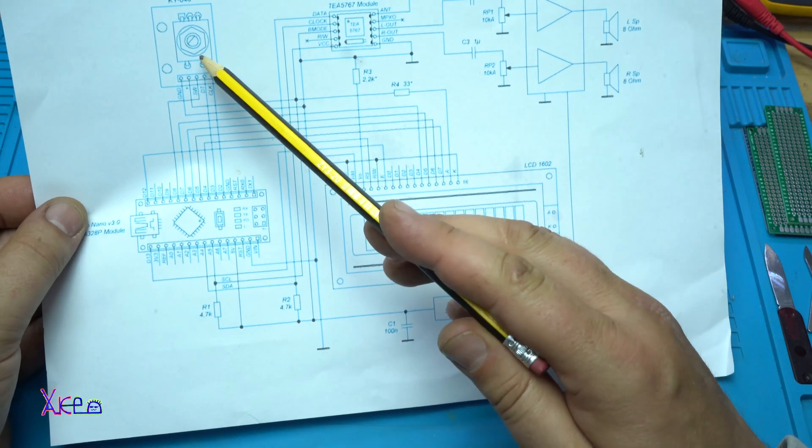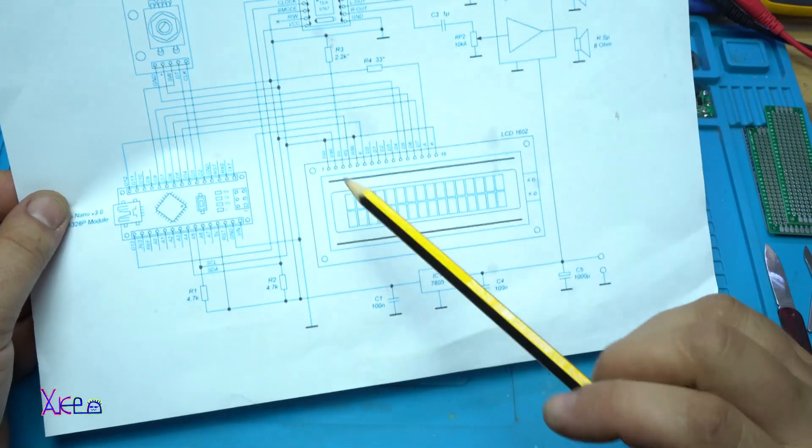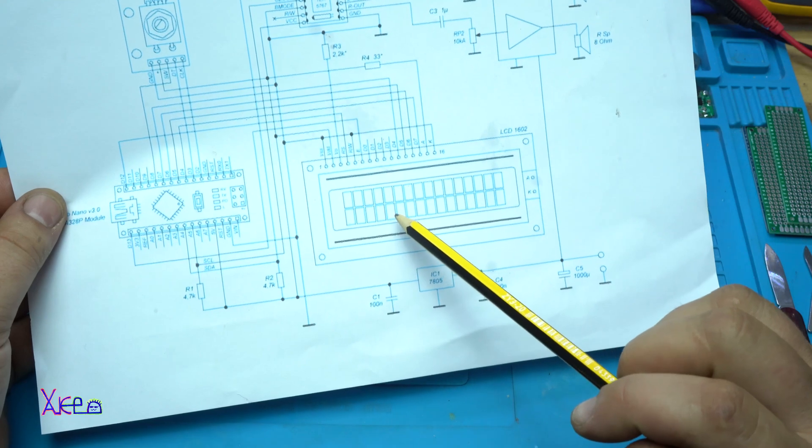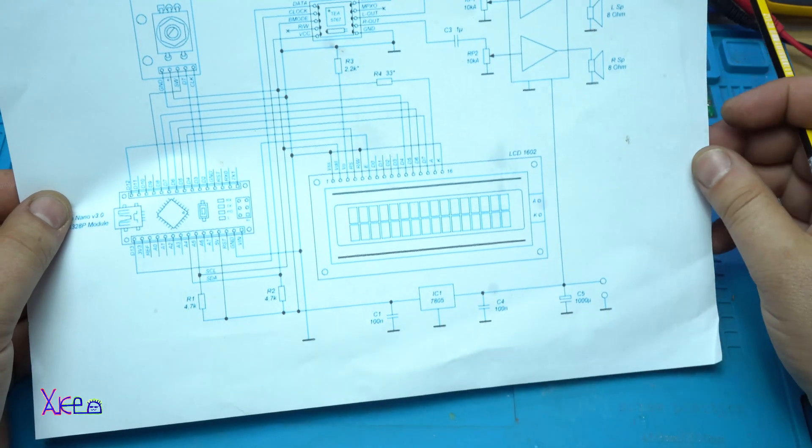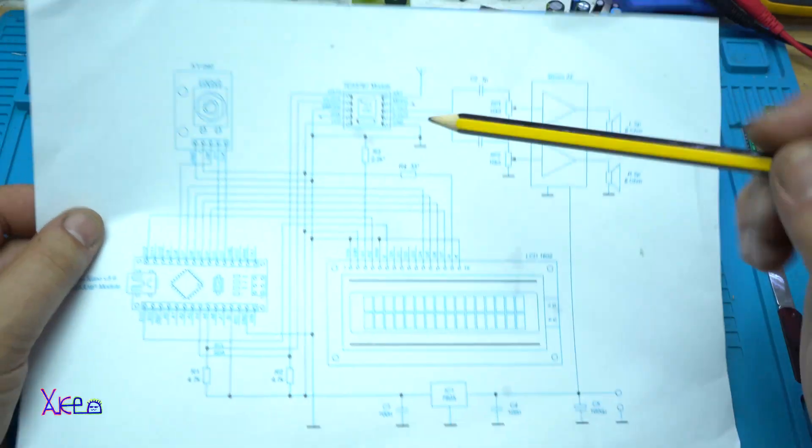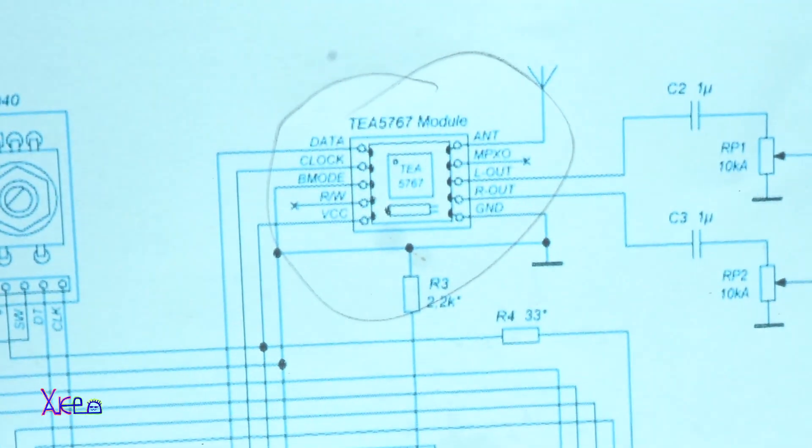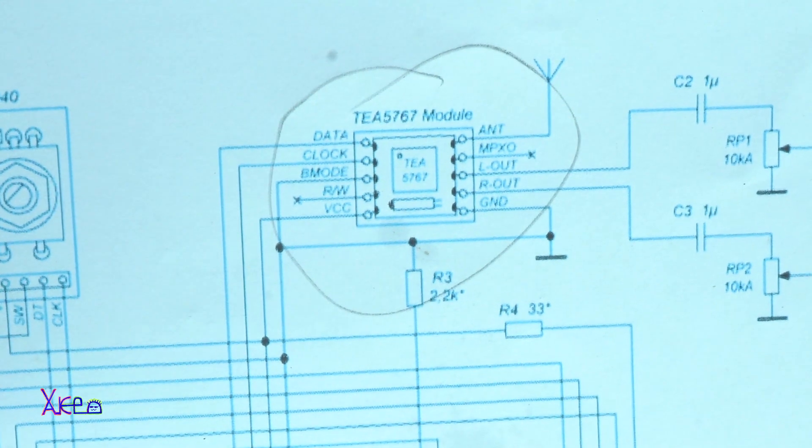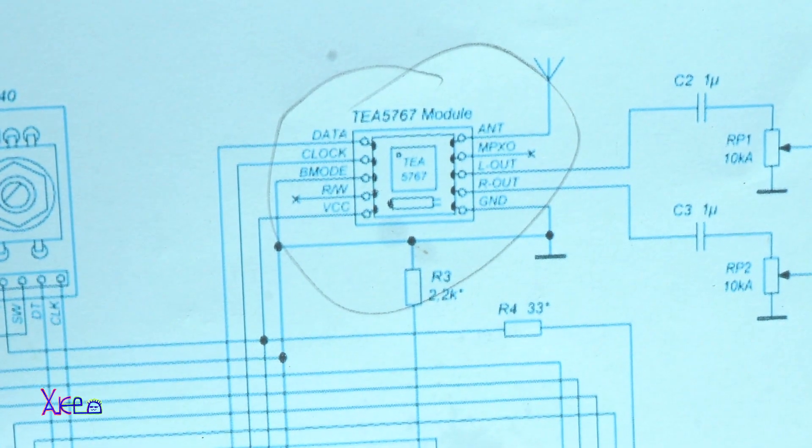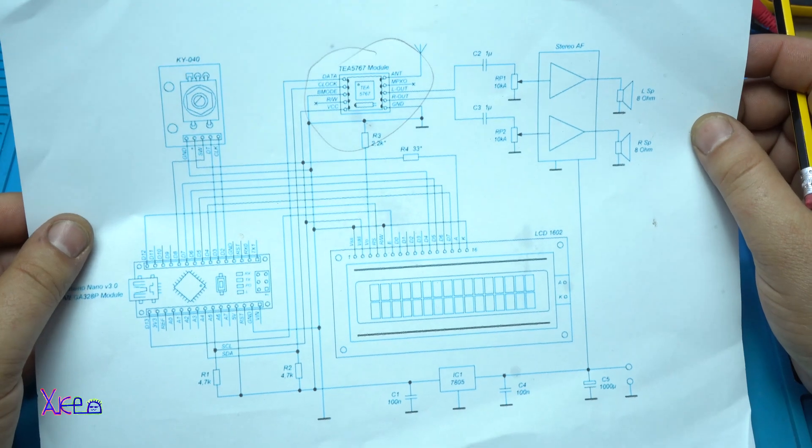You will need, as I said, rotary encoder, LCD display 16x2 characters, and this here is the main module that is TEA5767 radio module,